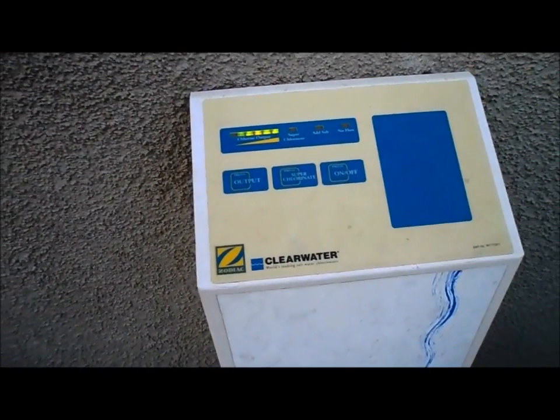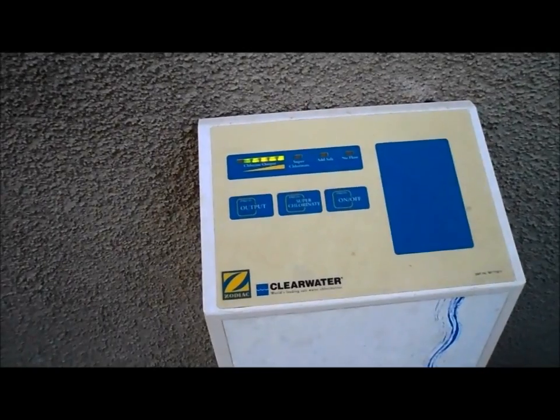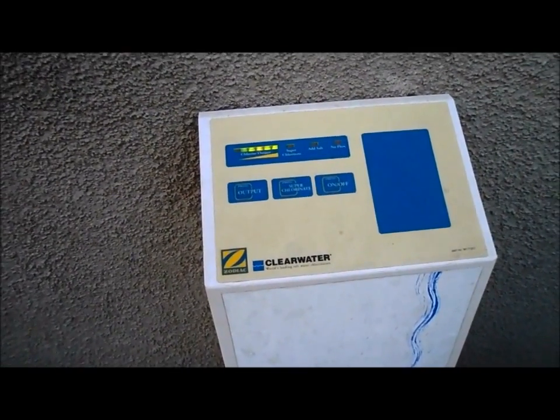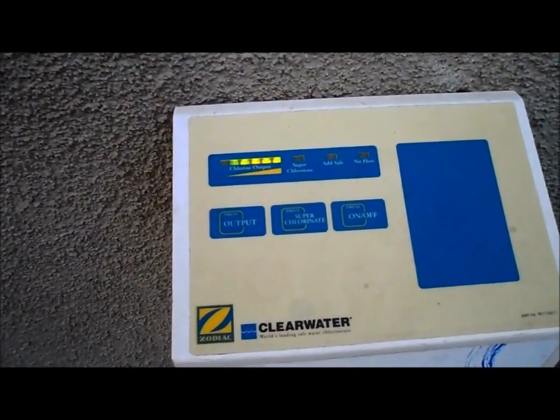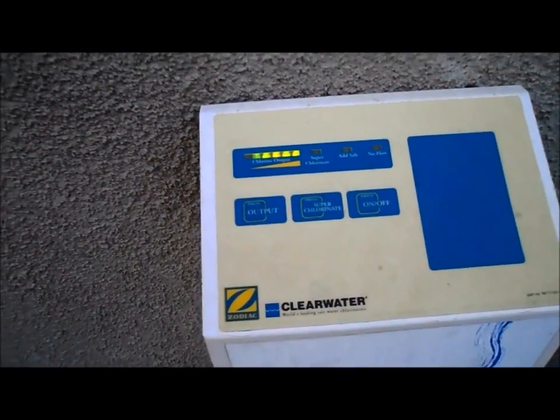This is a Zodiac Clearwater salt system, made for a smaller pool, 20,000 gallons or less. This is the control power center, and you can see it's pretty easy to read. You have the chlorinating output right there, it's got just a few buttons, and it's very easy to operate.